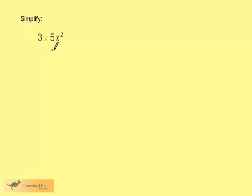We want to simplify 3 times 5x squared. This is 3 times 5 times x squared. 3 fives are 15, so we have 15 times x squared, which we just write as 15x squared.